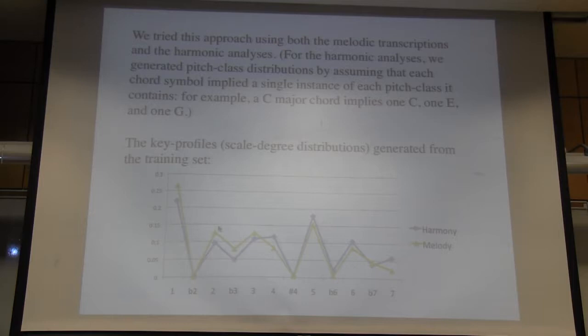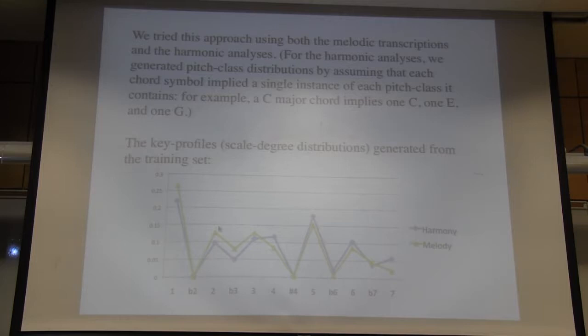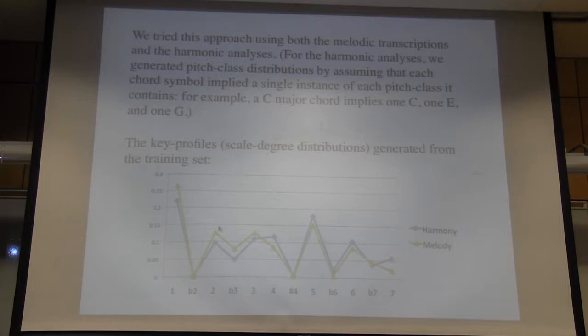We tried this approach two ways: first with melodic transcriptions — just counting up the pitch classes — and then for the harmonic analyses, generating pitch class distributions by assuming each chord contains a single instance of each pitch class it contains. So a C major chord implies 1 C, 1 E, and 1 G. The key profiles we came up with for the harmonic and melodic analyses were quite similar — they really represent the union of the major and natural minor scales. Any scale degree in either the major or natural minor gets a pretty high value; the degrees with the lowest values, flat 2 and sharp 4, don't occur in either scale.